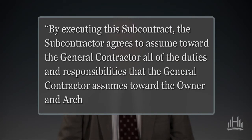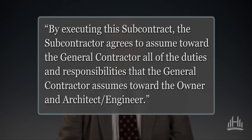Here's a typical example of a flow-down clause: 'By executing this subcontract, the subcontractor agrees to assume toward the general contractor engineer all of the duties and responsibilities that the general contractor assumes toward the owner and architect engineer.'